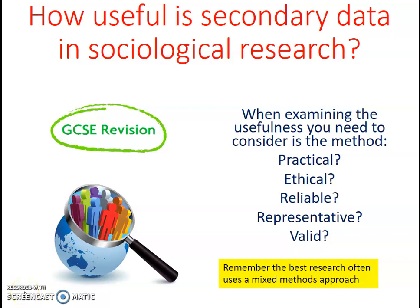Hi guys. This lecture is looking at how useful secondary data is in sociological research, examining it for the GCSE curriculum. When examining the usefulness of a research method you need to consider different standards: is it practical, ethical, reliable, representative, and can you generalise the findings? Is the method valid? I'll also talk about mixed methods at the end, which is one of the solutions to perhaps a very unreliable method.